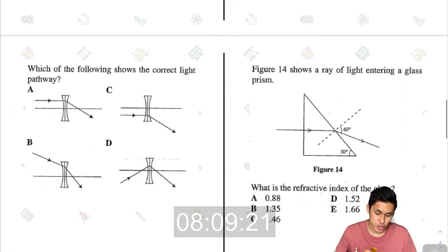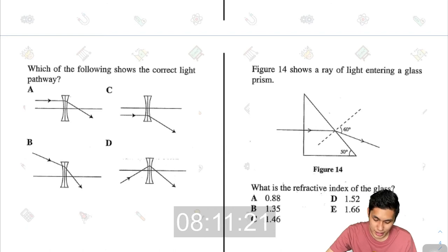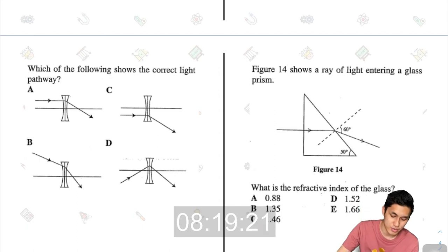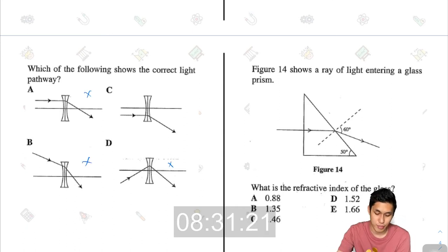Which of the following shows the correct light pathway? This is a concave lens. A concave lens is a diverging kind of lens. That means when the light ray goes into the concave lens, it will be diverged away from the center line. So this is wrong, this is wrong, and this one definitely even more wrong because this is more of a reflection. So C would be the correct answer.